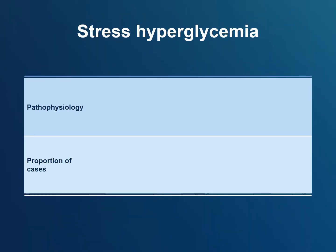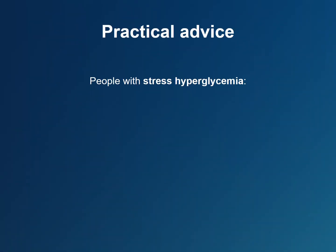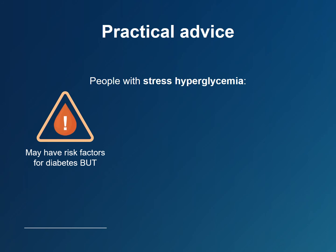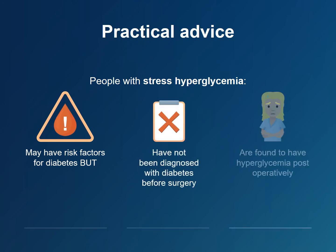There is another type of dysglycemia important in the post-operative setting: stress hyperglycemia. Stress hyperglycemia refers to hyperglycemia that develops in those without pre-existing diabetes due to the physiologic stress of surgery. It may be a harbinger of type 2 diabetes — up to 60% of people with stress hyperglycemia will develop type 2 diabetes within one year. People with stress hyperglycemia may have risk factors for diabetes but have not been previously diagnosed, and it is discovered post-operatively.